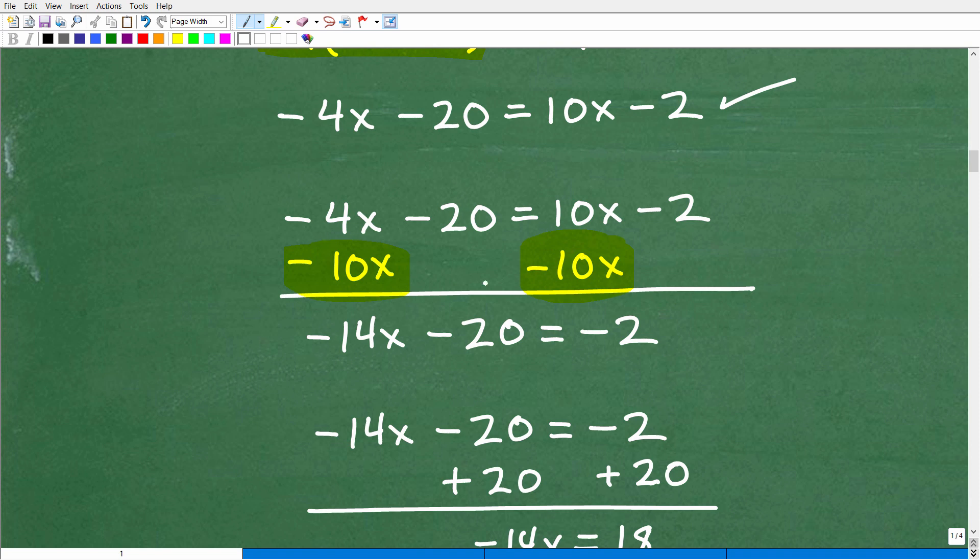So I'm going to subtract 10x from both sides of the equation. So when you write things like that, you always kind of add down in a column manner. So negative 4x plus negative 10x is negative 14x. Negative 20 plus 0 is negative 20. 10x minus 10x is 0. And then negative 2 plus 0 is negative 2. So as a teacher, I can see, okay, boom, I'm seeing exactly what steps the student's taking. I'll see what they did.